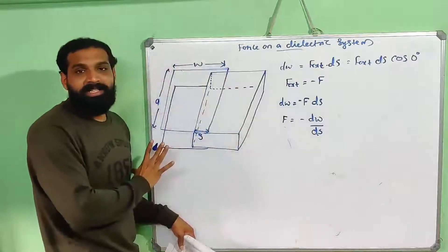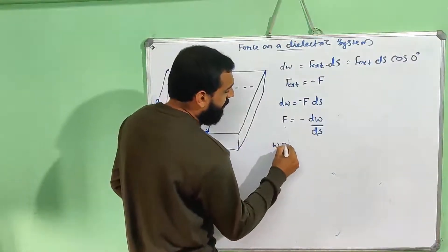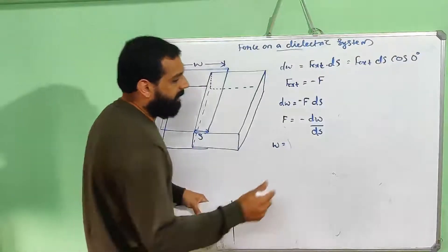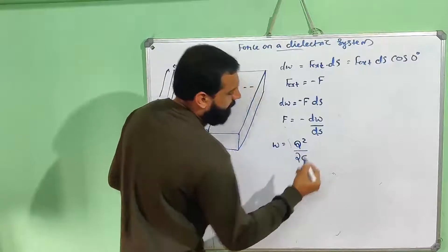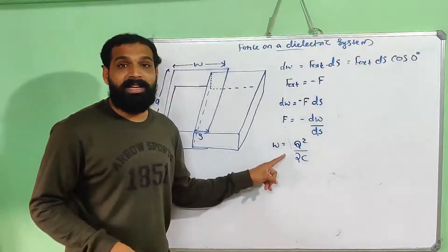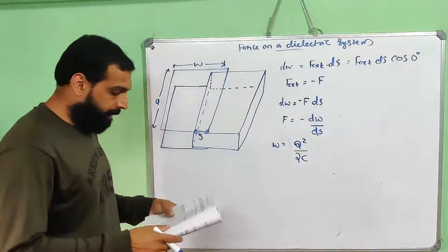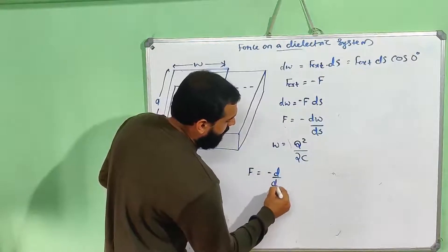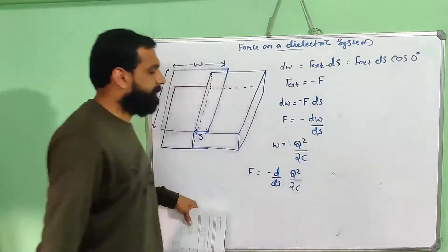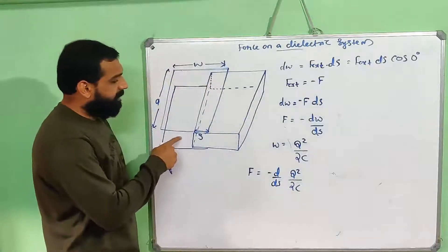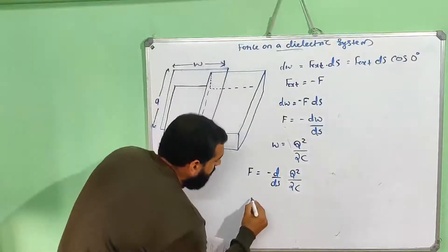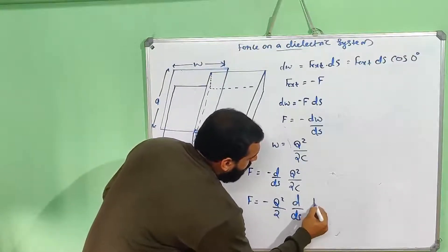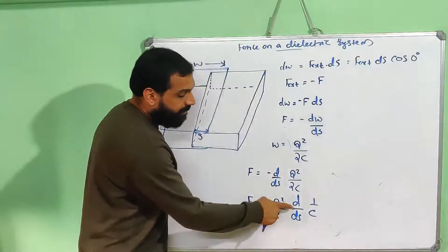In the case of the capacitor, we know that work done — energy stored in the capacitor — equals one half CV squared, or q squared by 2C. So I will get F equals minus d/ds of (q squared by 2C), which equals minus q squared by 2 into d/ds of (1/C). This gives minus q squared by 2 into minus 1 by C squared into dC/ds.